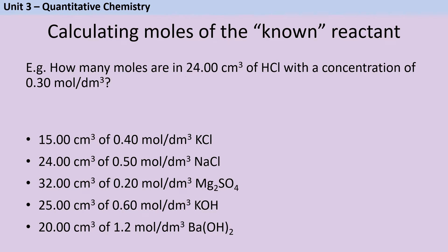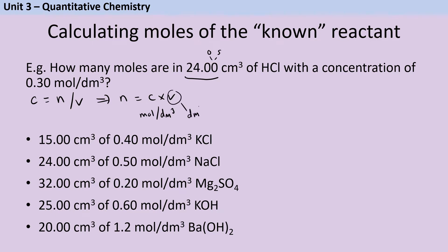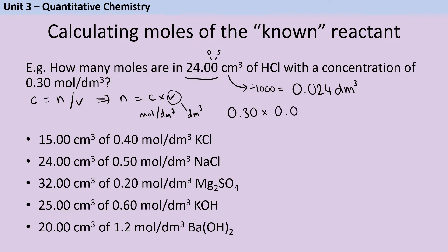So let's say that from my burette I have used 24.00 centimetres cubed of hydrochloric acid. The convention is that titration volumes are always given to two decimal places, although the second decimal place will always be a zero or a five. To work out the number of moles I rearrange the concentration formula to: moles equals concentration times volume. Since concentration is in moles per decimetre cubed, I need to convert the volume by dividing by 1000, giving 0.024 dm³. So 0.30 multiplied by 0.024 gives 0.0072 moles.